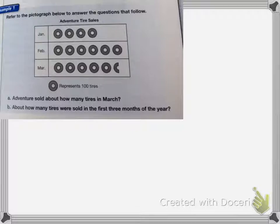This one is a pictograph, and it wants us to answer the questions that follow the graph. Adventures sold how many tires in March? On a pictograph, we of course have pictures, and then there's going to be a key at the bottom that shows what each of those pictures represents.